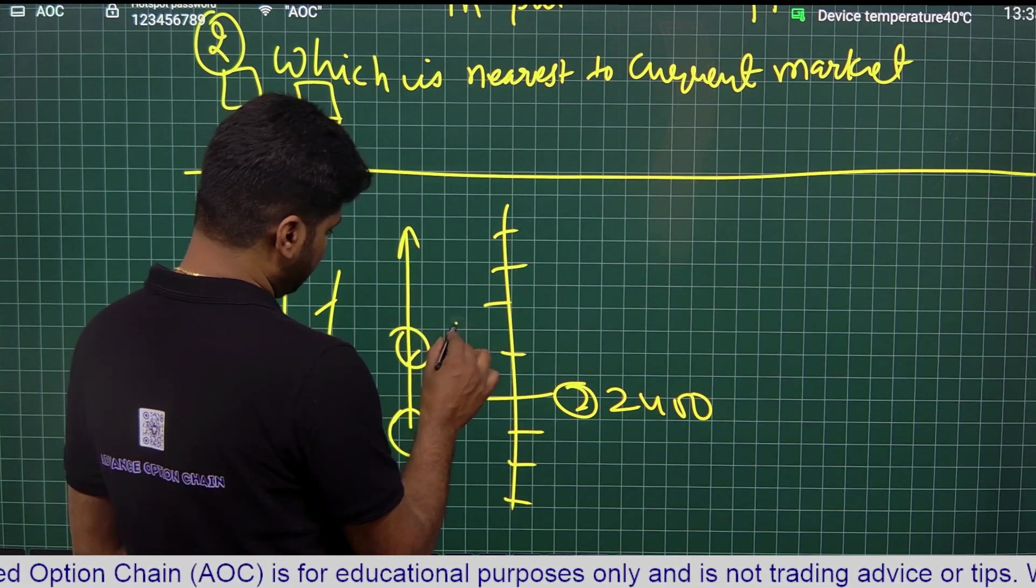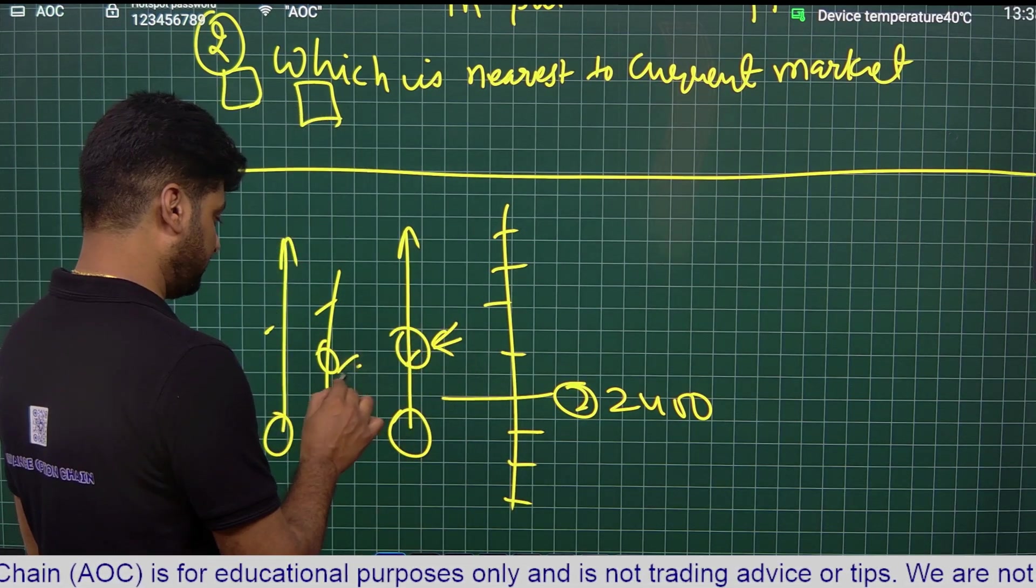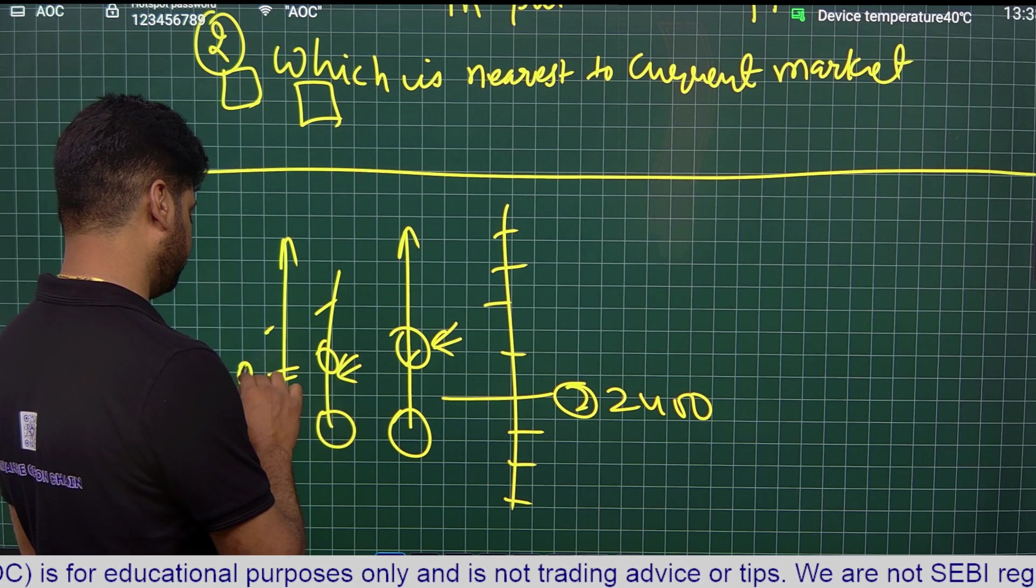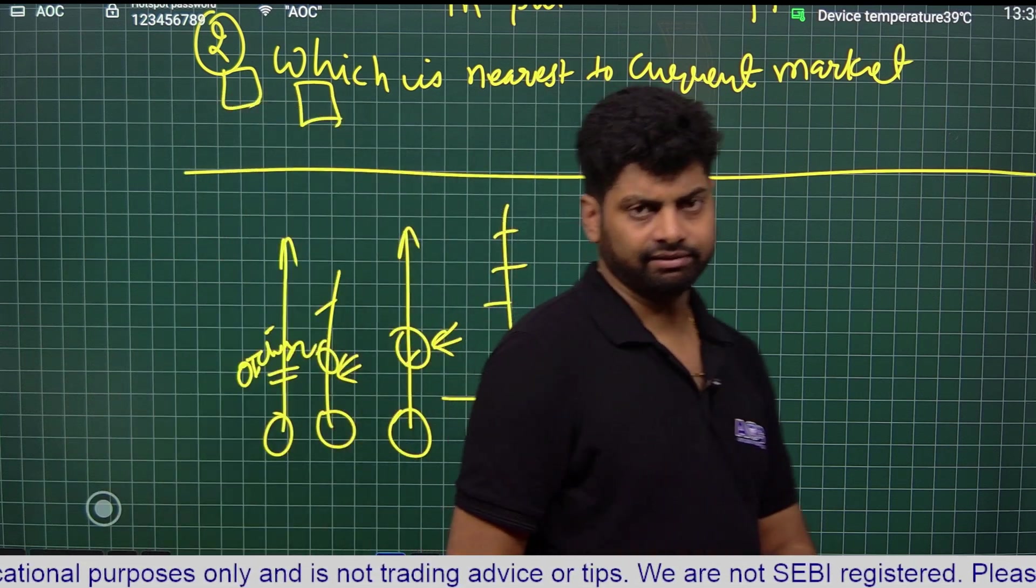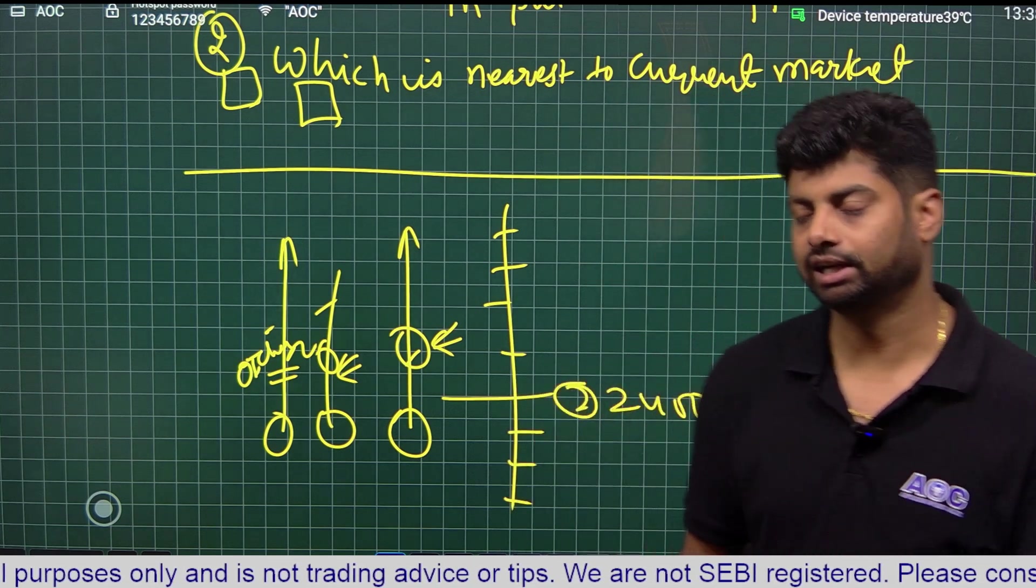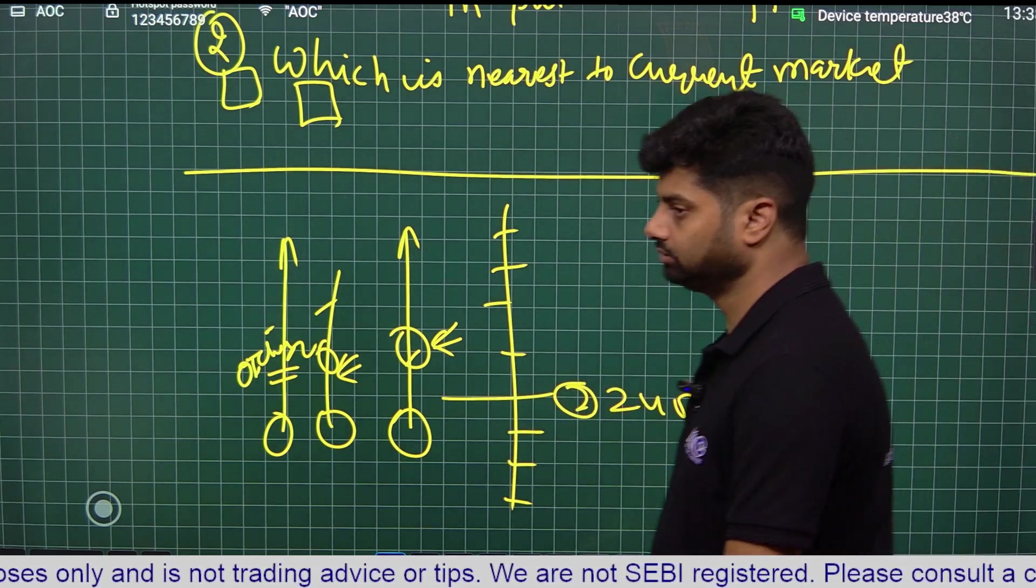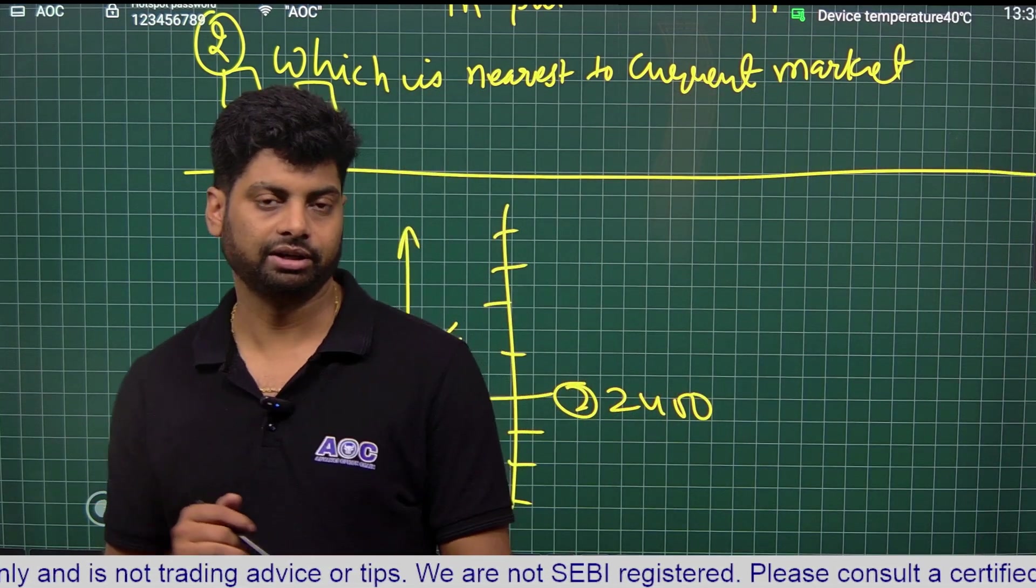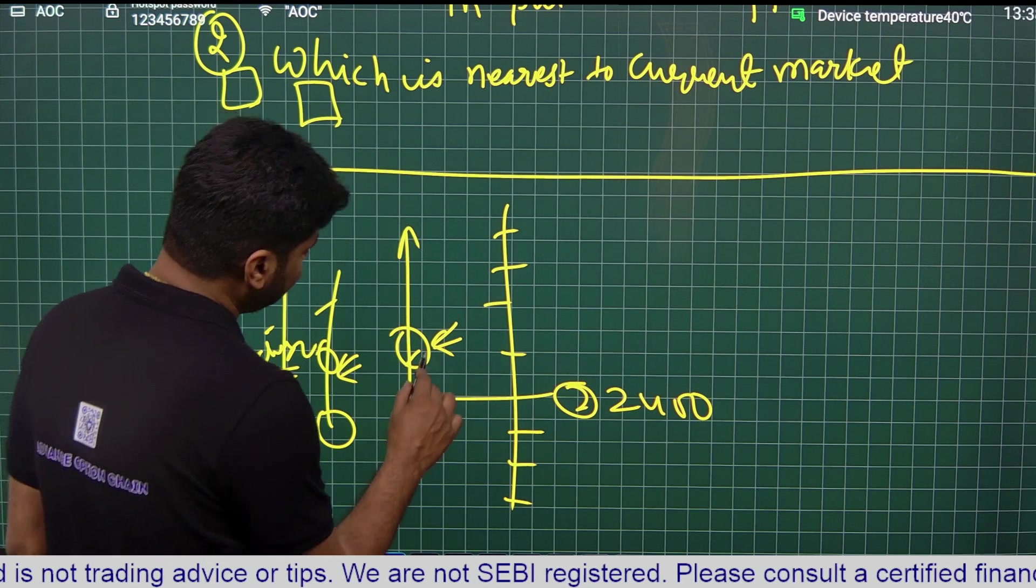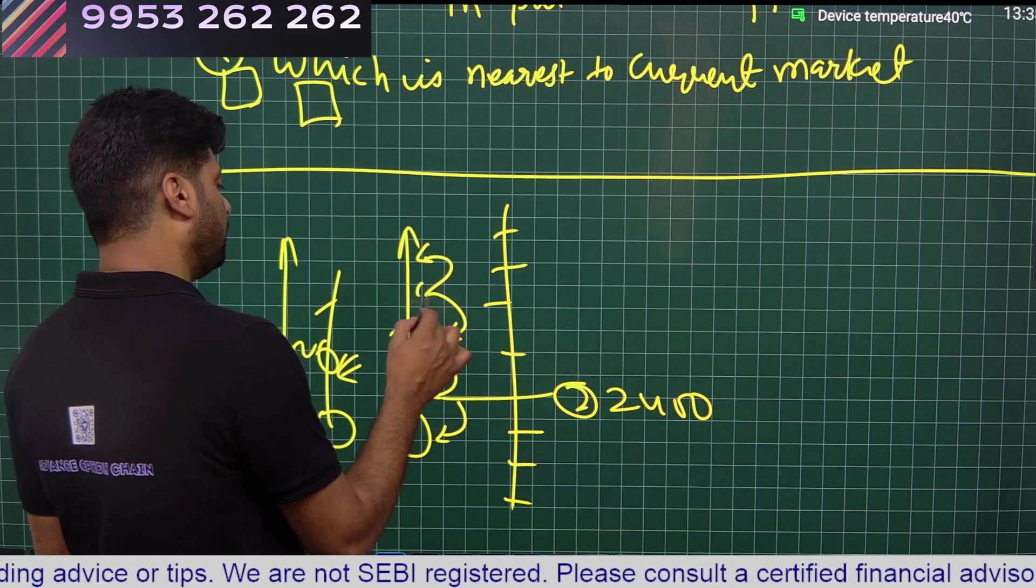We will give 100% marking to the maximum volume of that strike price and calculate relative percentage of those strike prices. Similarly for OI, we will give 100% for the maximum OI and calculate other percentages in terms of maximum OI.